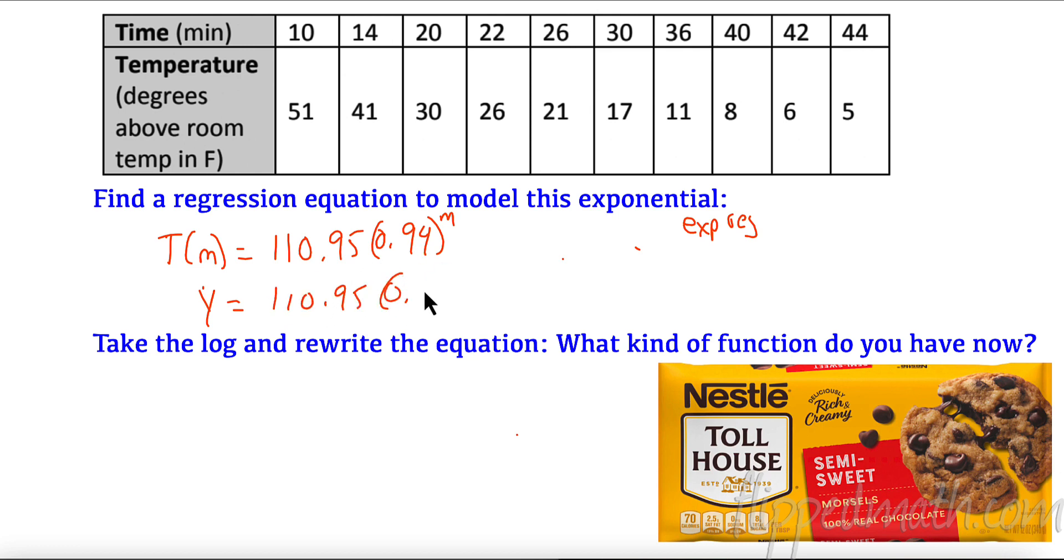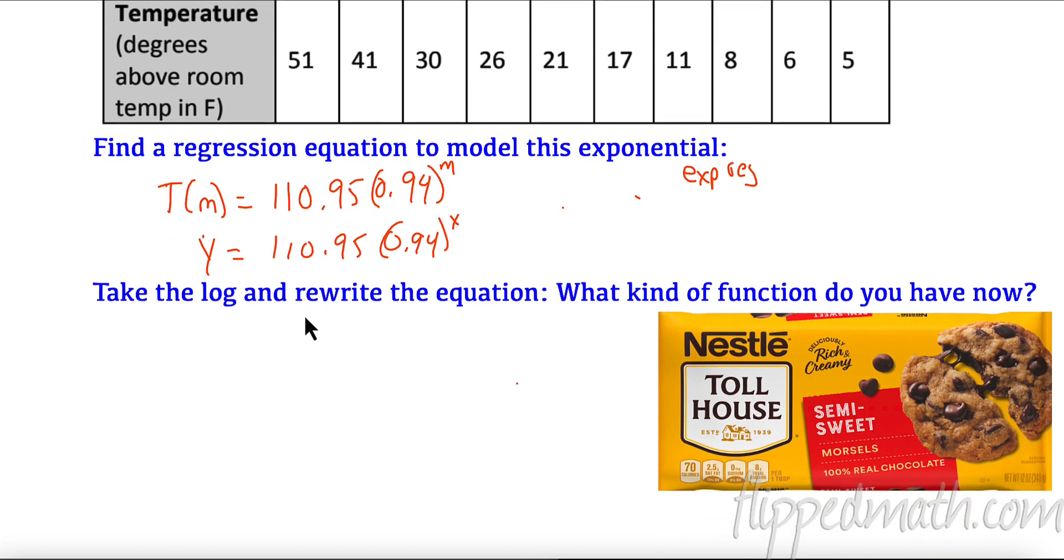Now I'm going to just call this y and I'm going to call this x to make the next step a little bit easier. So we want to take the log and rewrite the equation. I'm going to take the log of the whole thing, so log of y equals log of 110.95 times 0.94 to the x. Let's use our properties here and solve this. So I can expand this, so this is really log of 110.95 plus log of 0.94 to the x.